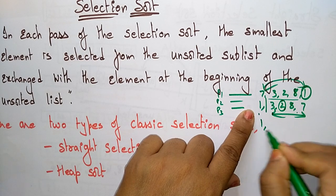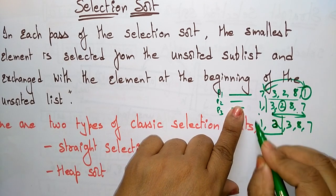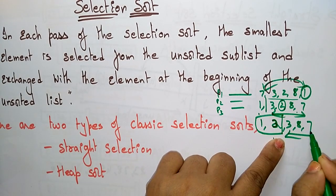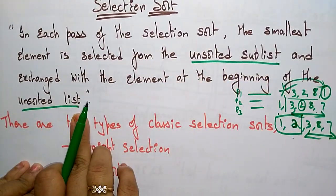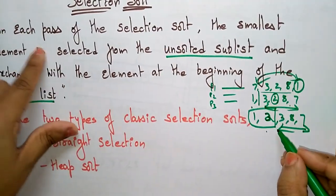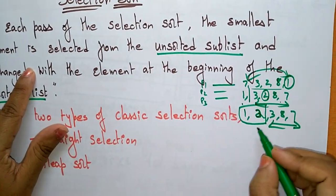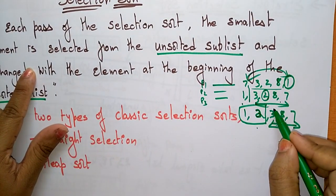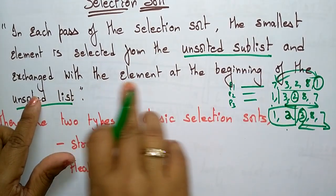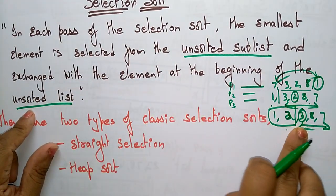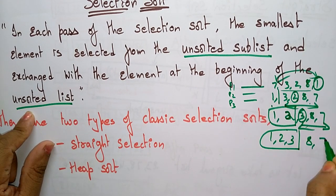So now 1, 2 are sorted, followed by 3, 8, 7. Now I have to concentrate only on the unsorted because the definition says to focus on the unsorted sublist. In each pass of the selection sort the smallest element is selected from the unsorted list. So in this, what is the smallest element? 3 is the smallest element. The smallest element is exchanged with the element at the beginning of the unsorted. This is itself the beginning, so 1, 2, 3 are now sorted. The remaining elements are 8, 7.